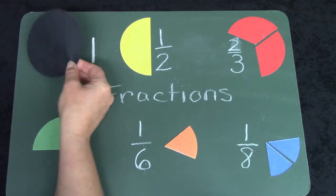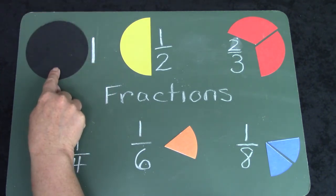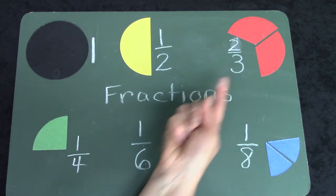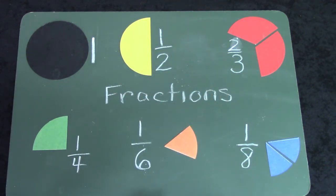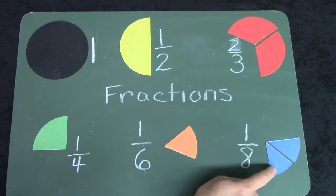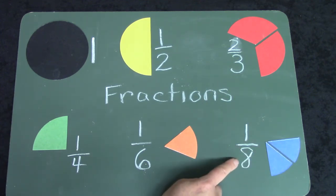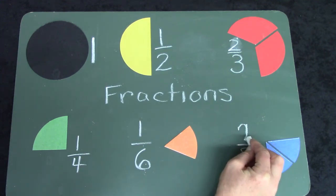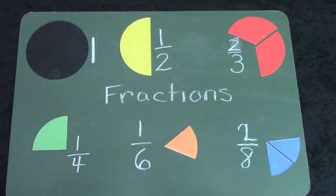We were using circles to show one whole number, and we didn't have a whole number. We only had part of the circle. Here I've changed this from one eighth to how many pieces? Two out of the eight pieces that we need.